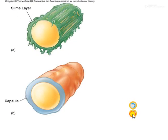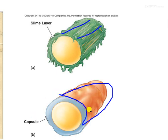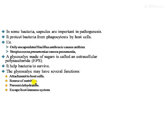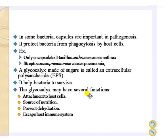Here you can see the difference between the slime layer and the capsule. In one figure the glycocalyx is loosely bound — that is why it is called a slime layer. In the other figure it is firmly attached — that is why it is called a capsule. In some bacteria, capsules are important in pathogenesis. Capsulated bacteria are more virulent than non-capsulated bacteria. For example, only encapsulated Bacillus anthracis can cause anthrax, and Streptococcus pneumoniae can cause pneumonia.